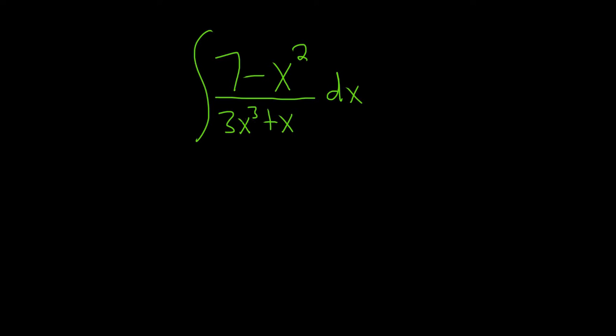If you were to make a u substitution you would call the bottom u and you would get 9x squared plus 1. And in the numerator we have 7 minus x squared so it's probably not a good route.